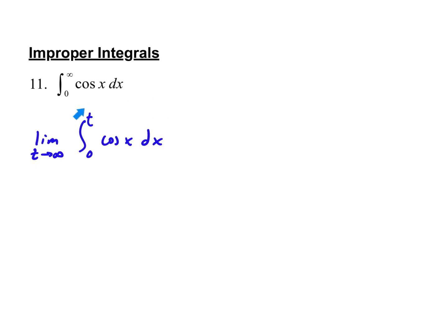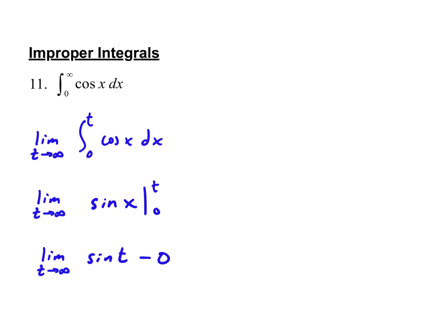So straightforward enough — integrate this like normal, treat t like it's a number. What is the integral of cosine of x? Cosine of x from t to 0. Essentially I'm taking the limit of sine of t minus 0, because sine of 0 is 0. What's happening with the sine as we get bigger and bigger?